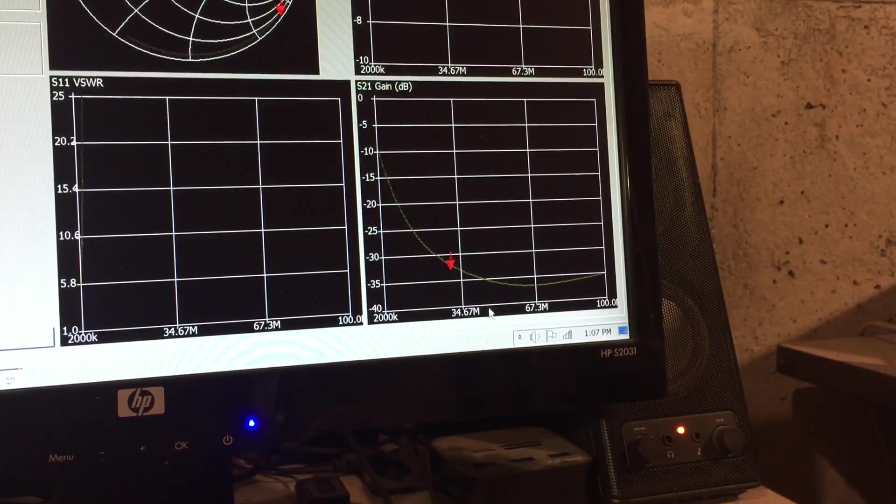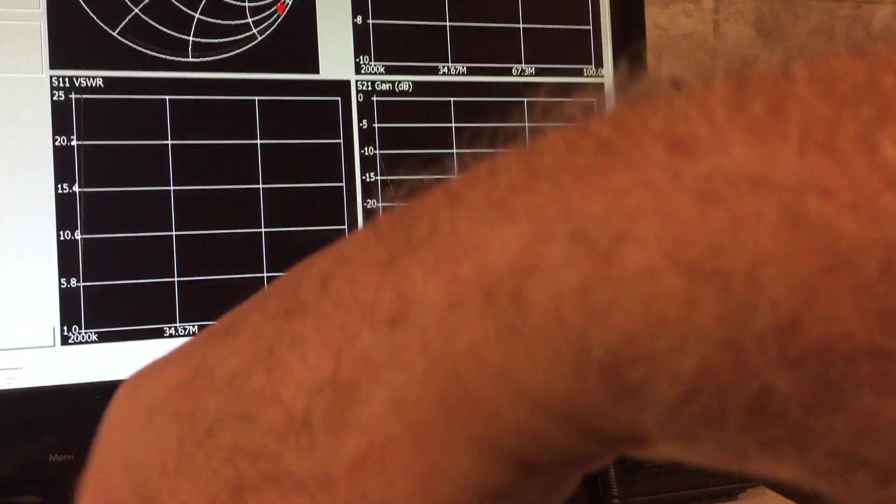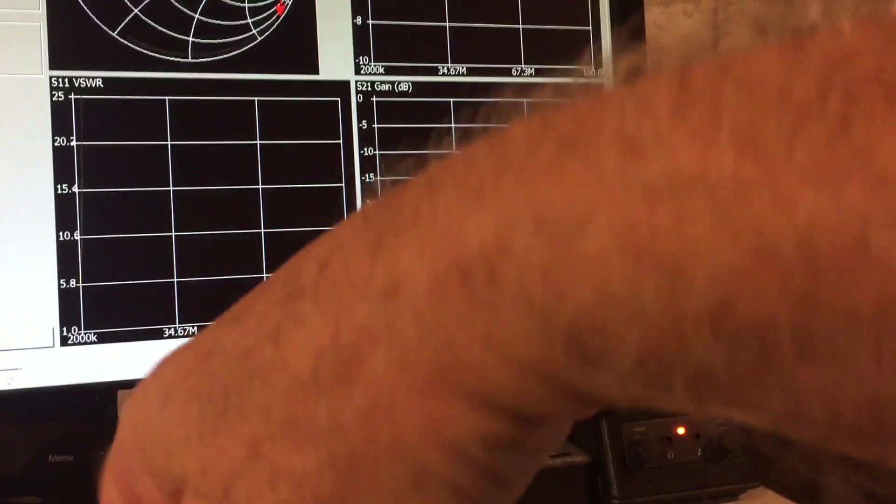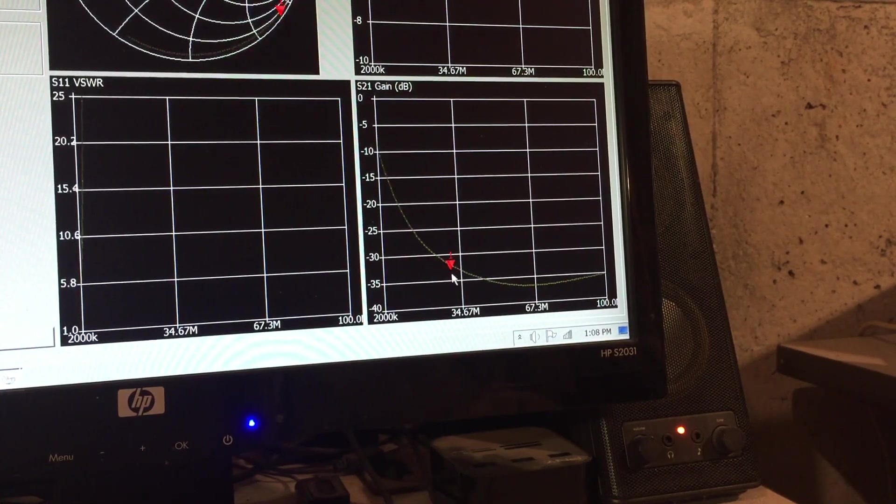At around 30 megahertz I'm getting a little better than minus 32, 33. Remember that curve. We'll go ahead now and remove the material 61 choke and put in the material 43.